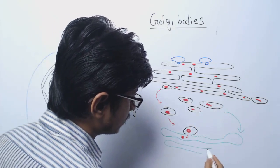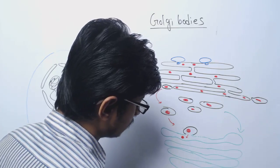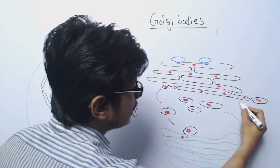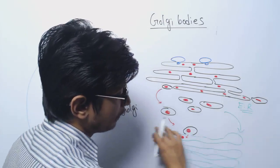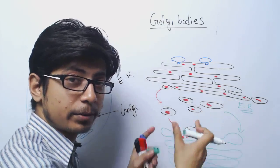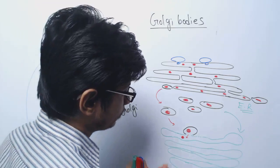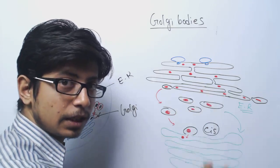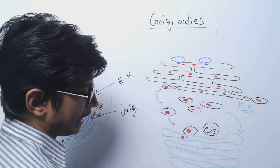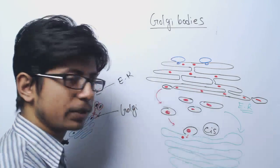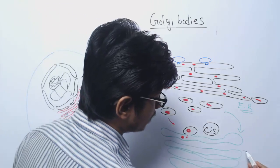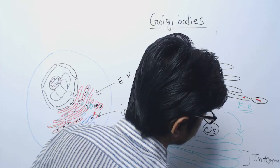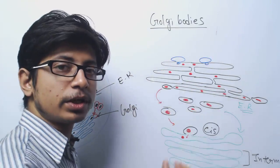The Golgi apparatus looks like stacked cisternae. The interaction between the ER and the very first cisternae of the Golgi apparatus that are in direct contact with ER vesicles — that region is known as the cis-Golgi. On the other hand, the portions present at the end, towards the cell membrane, are known as the trans-Golgi network. And those cisternae present in the middle are known as the intermediate Golgi, or intermediate Golgi network. So we have the cis-network, intermedial network, and trans-Golgi.